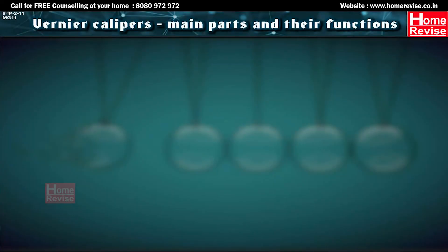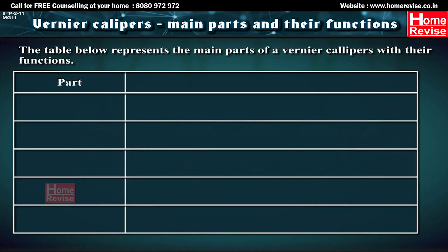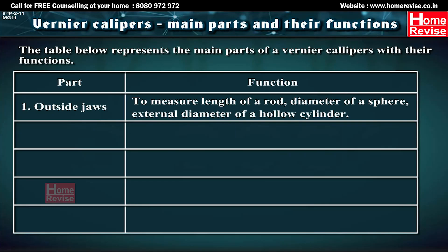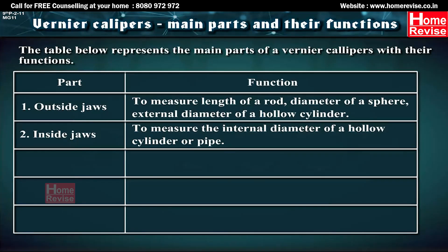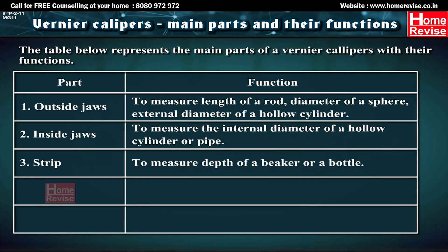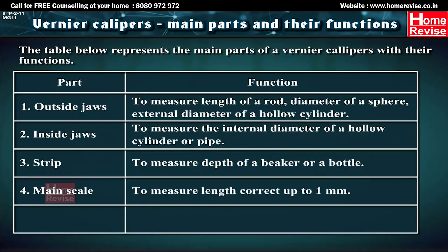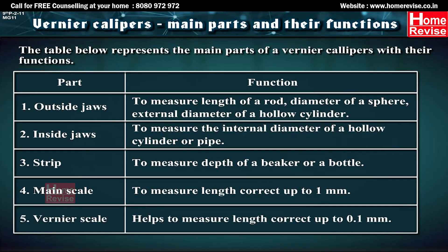The main parts of a Vernier Calipers and their functions: (1) Outside Jaws — measure length of a rod, diameter of a sphere, external diameter of a hollow cylinder. (2) Inside Jaws — measure internal diameter of a hollow cylinder or pipe. (3) Strip — measures depth of a beaker or bottle. (4) Main Scale — measures length correct up to 1 mm. (5) Vernier Scale — helps measure length correct up to 0.1 mm.